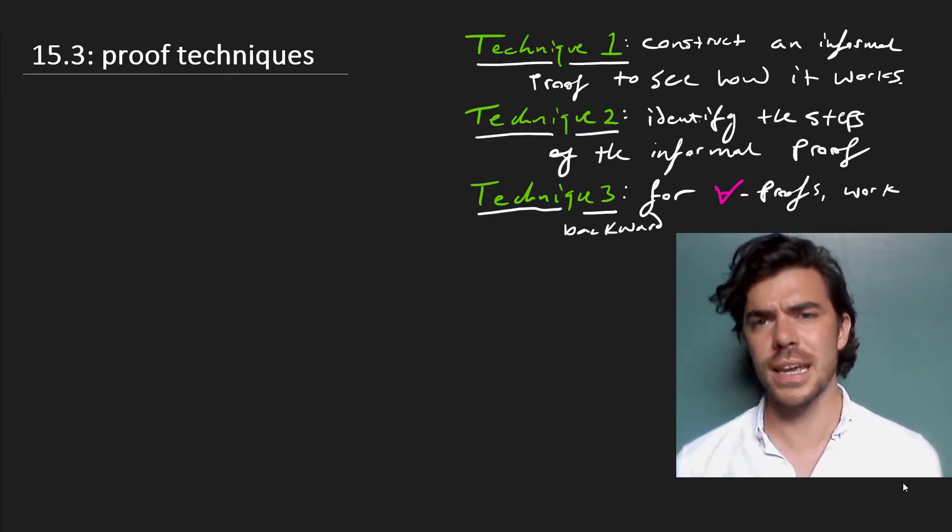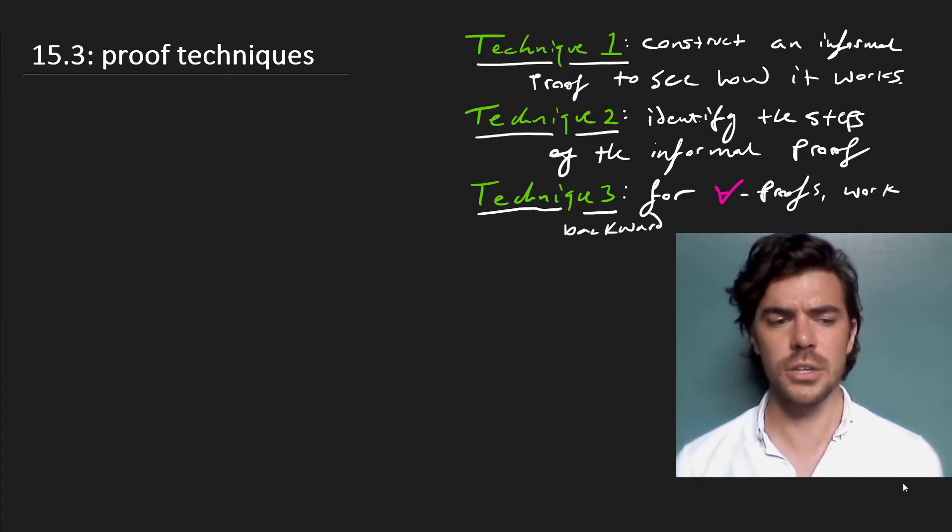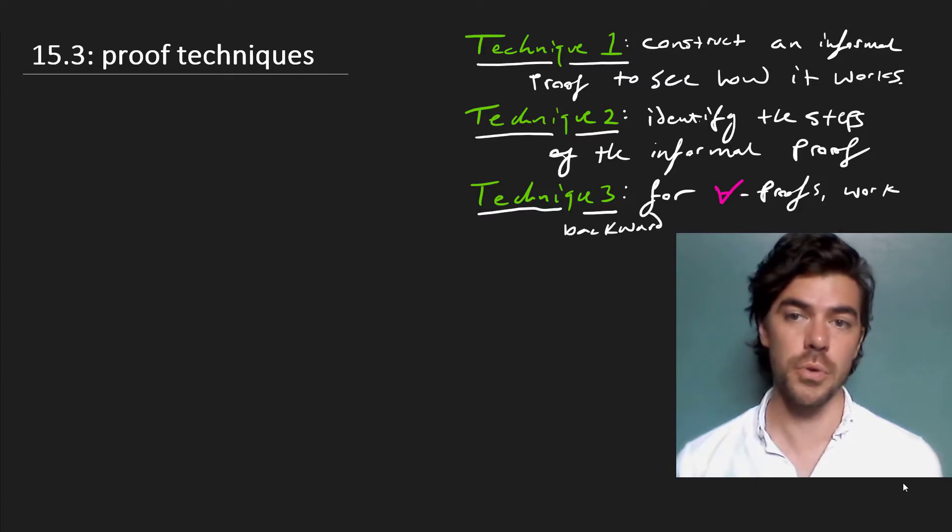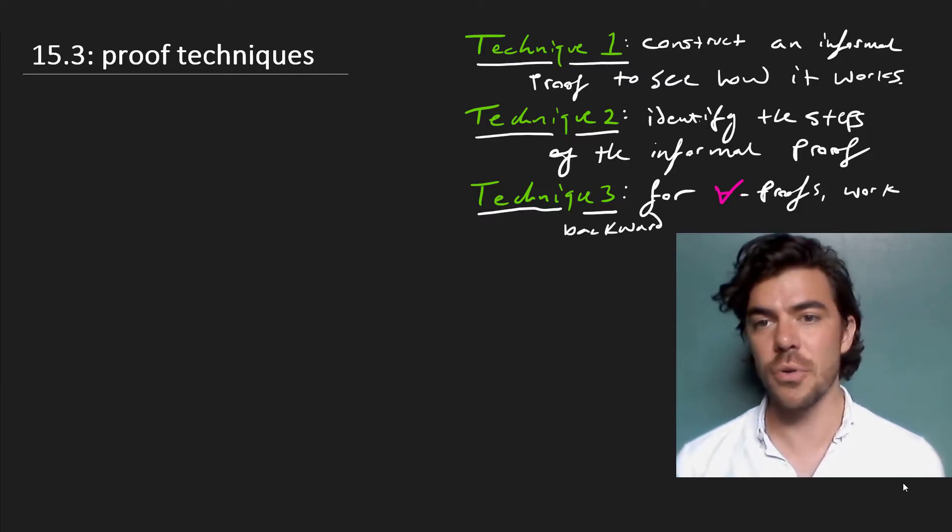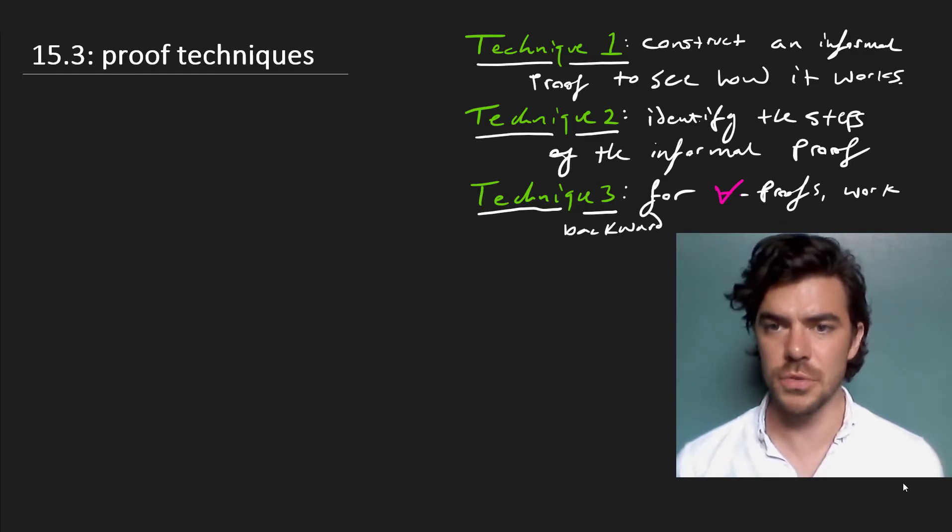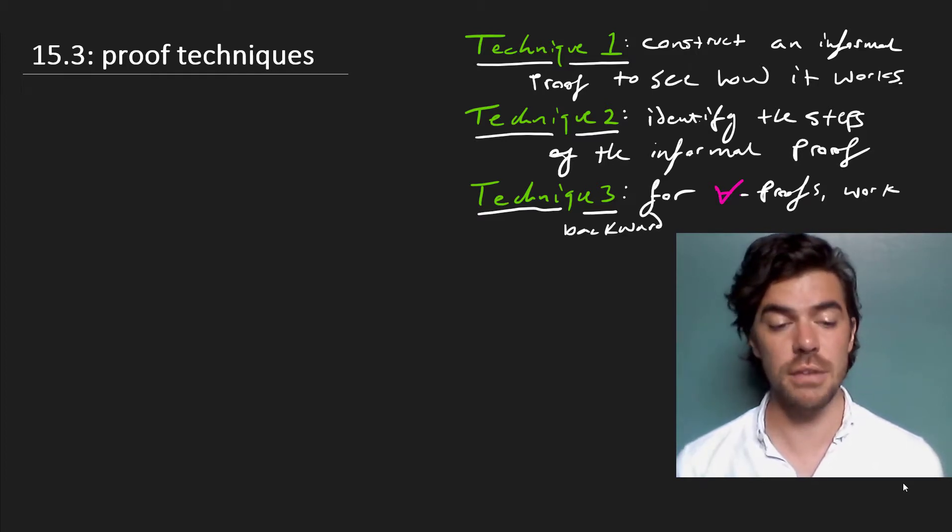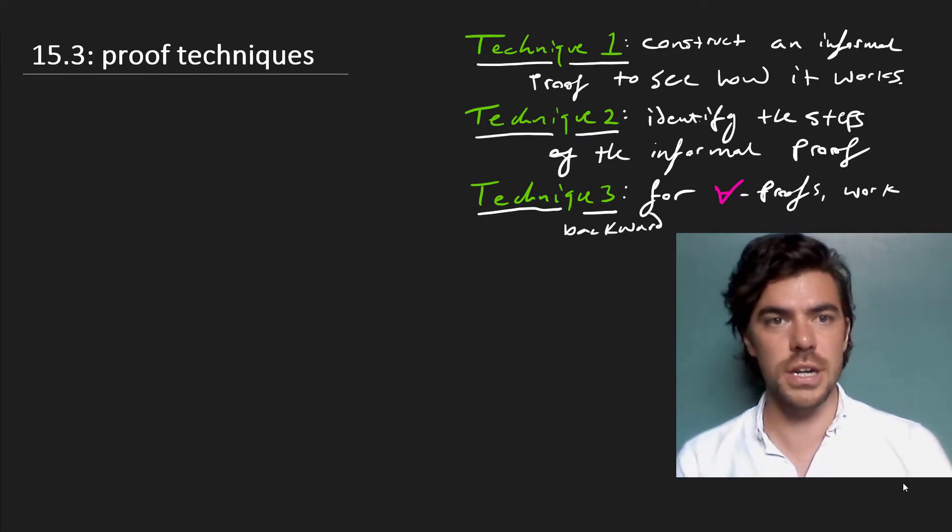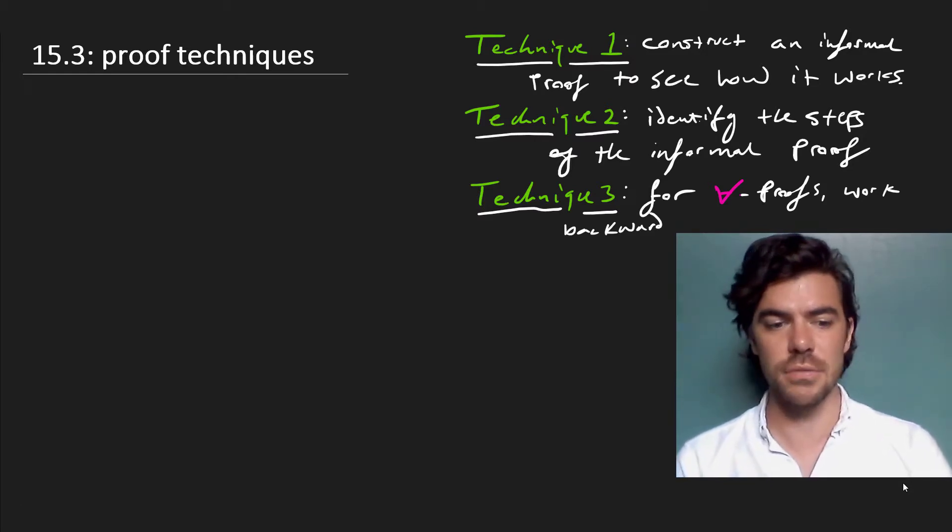Once you've constructed an informal proof, you can use the steps that you employed in that proof to guide your construction of the formal proof. And finally, for universal type proofs, you can always work backward. This doesn't work so well with existential type proofs, but for universal proofs, it can really show you where you're going. Let's have a look at an example of this with a larger derivation than the ones we considered in prior videos.